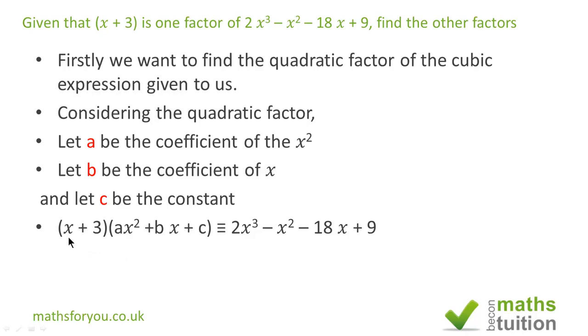So what we have is (x + 3) into ax² + bx + c equivalent to 2x³ - x² - 18x + 9. So we now need to expand the bracket and multiply through.